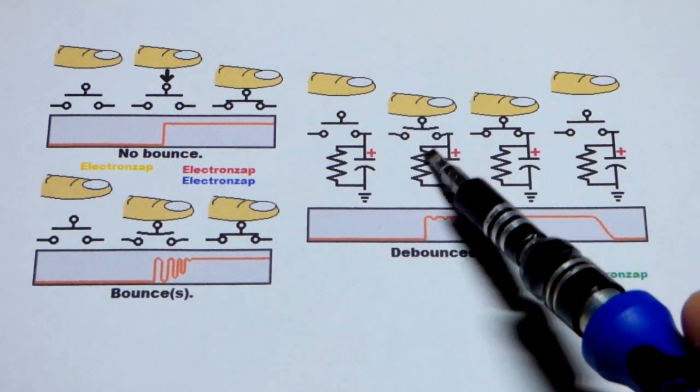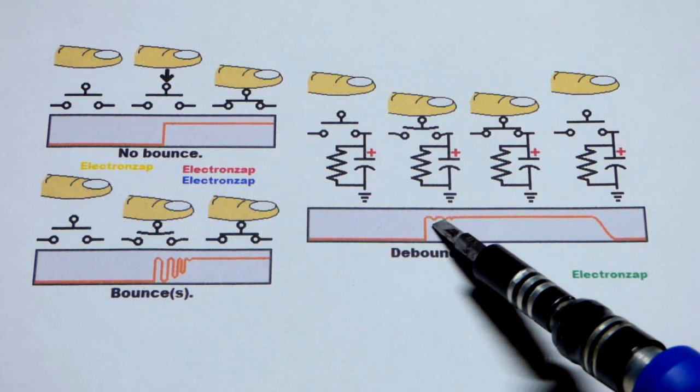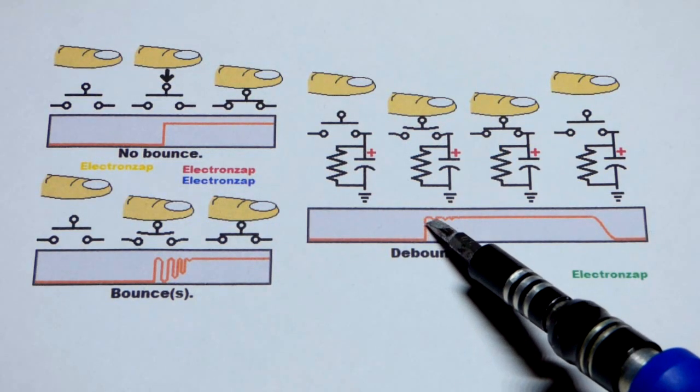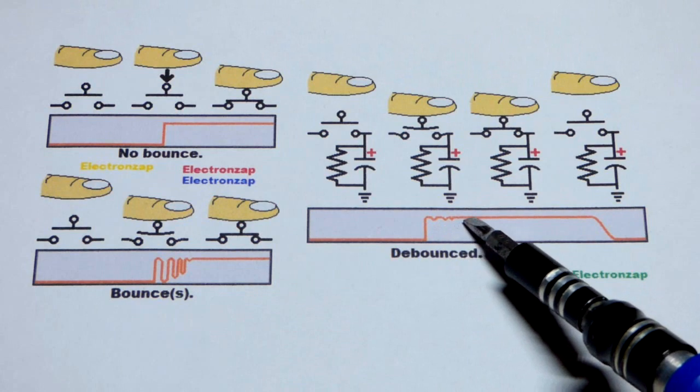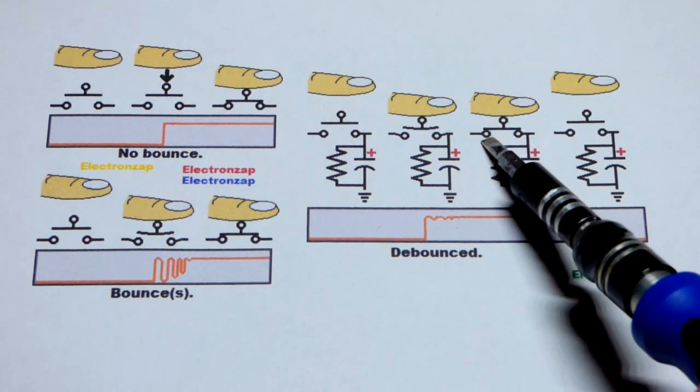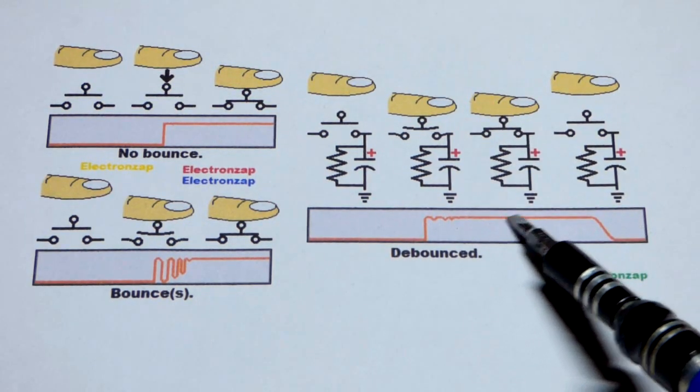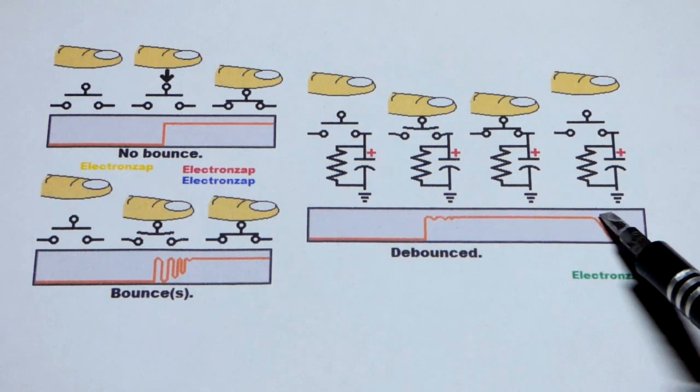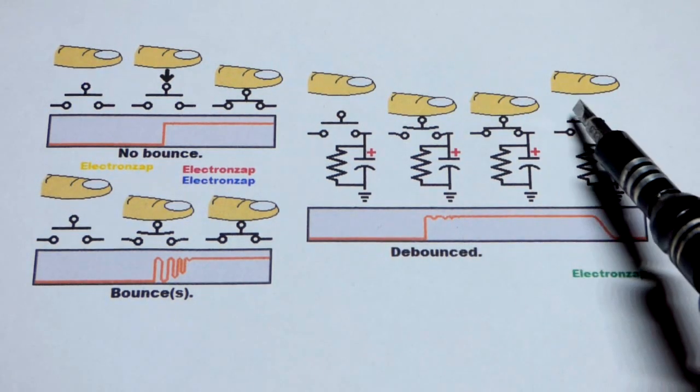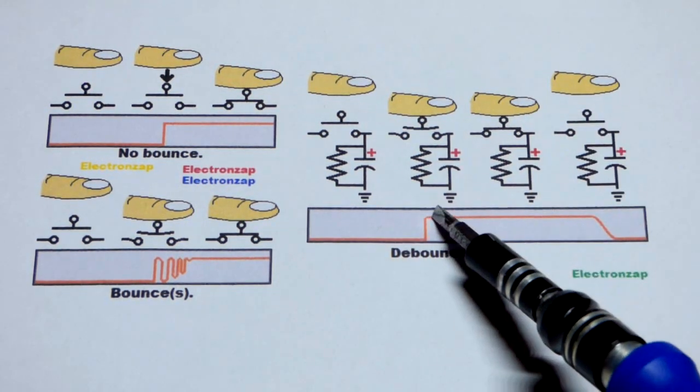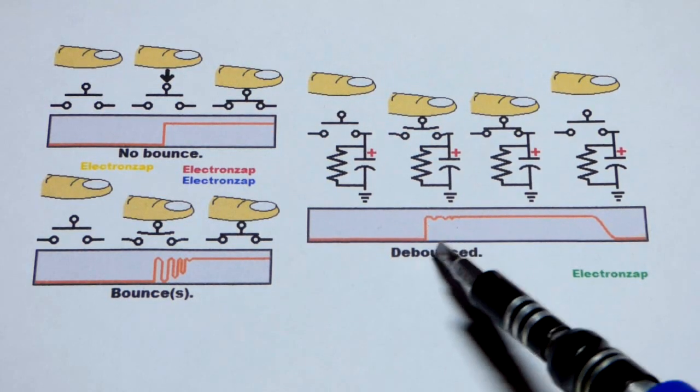So you got to use a high enough value where each bounce won't cause it to discharge at all, hopefully. But it may discharge a slight amount, but it still stays high or whatever. And then finally, the switch will settle and we should be able to hold a steady voltage until we release it.